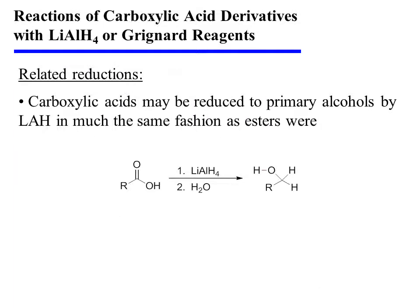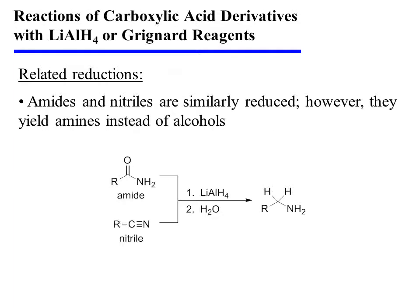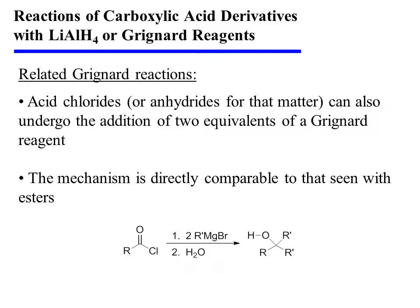There are some related reductions worth noting. Carboxylic acids may be reduced to primary alcohols by lithium aluminum hydride in much the same fashion as esters were. Amides and nitriles are similarly reduced; however, they yield amines instead of alcohols. Additionally, acid chlorides and anhydrides can also undergo the addition of two equivalents of a Grignard reagent, and the mechanism is directly comparable to that seen with esters.